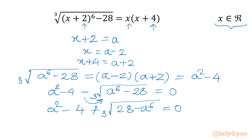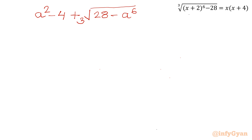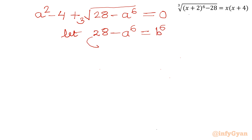Now I will use another substitution. Let us consider the radicand equal to b power 6. So we have a squared minus 4 plus cube root of (28 minus a power 6) equal to 0. Now let us consider 28 minus a power 6 equal to b power 6. From this equation I can write a power 6 plus b power 6 equal to 28. This is our equation number 1.